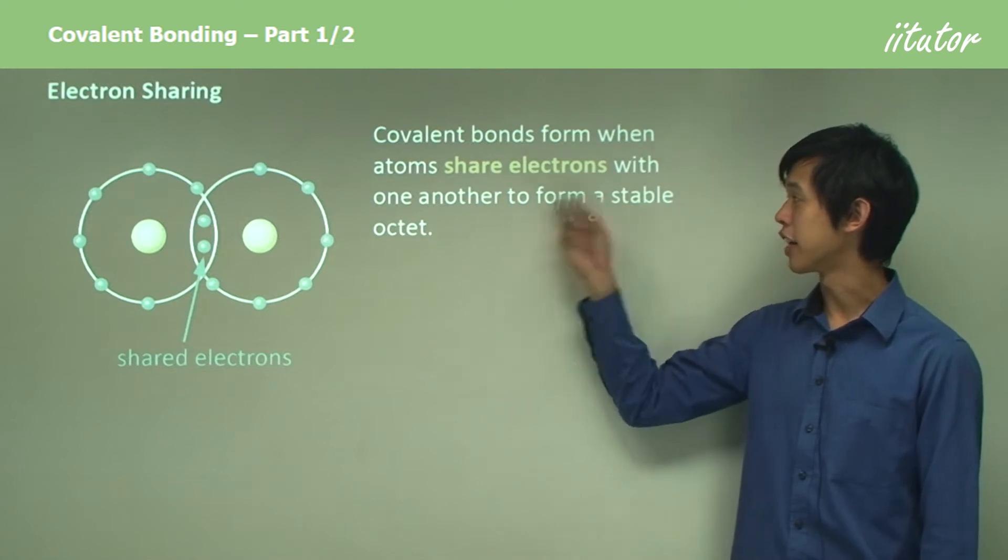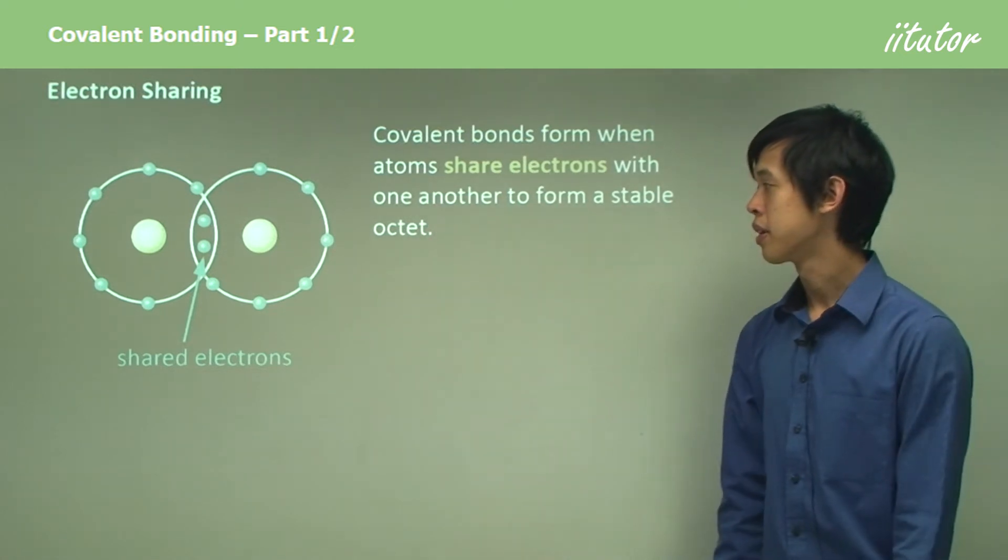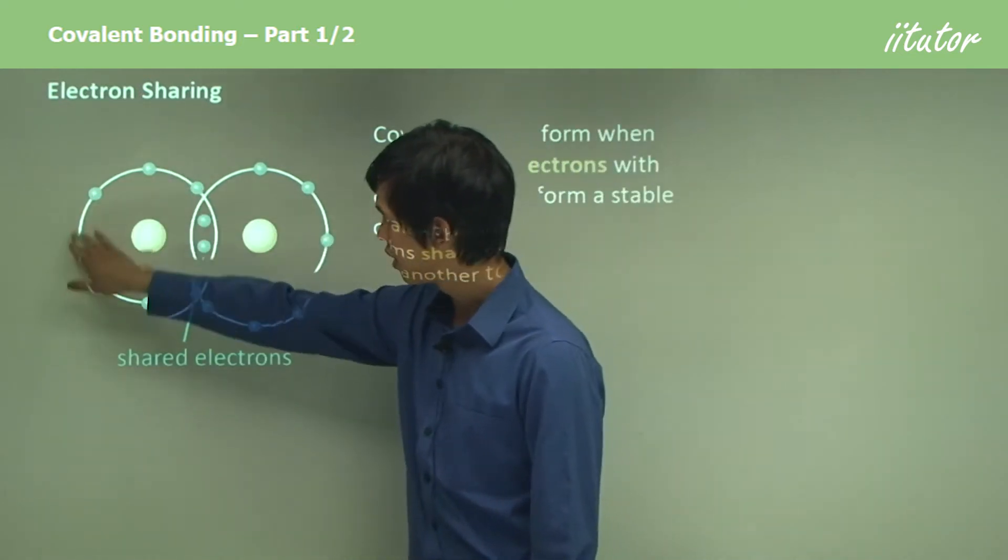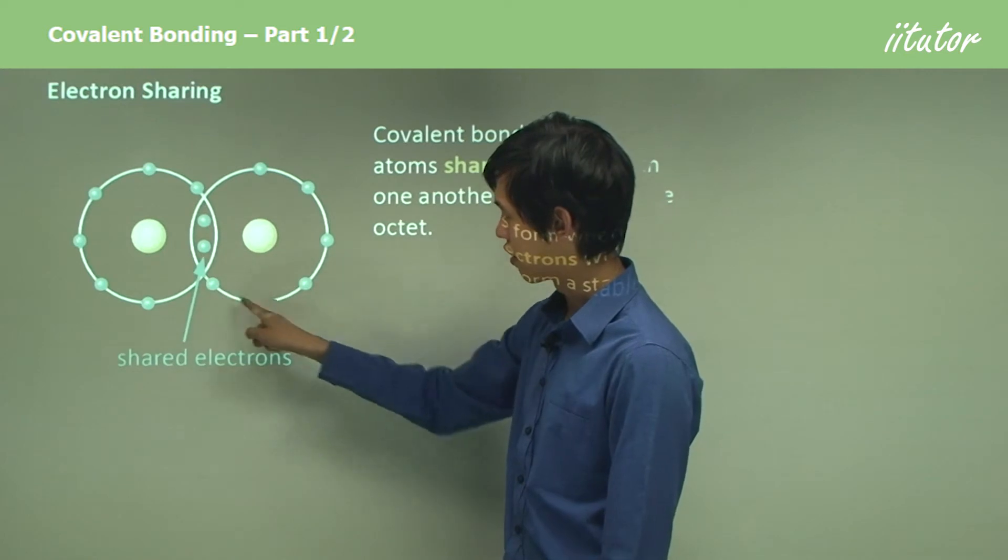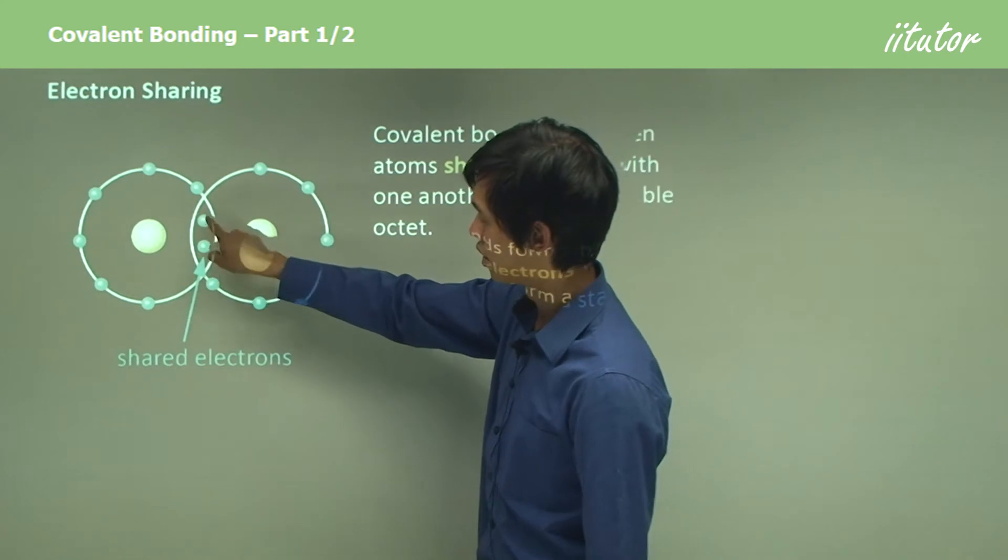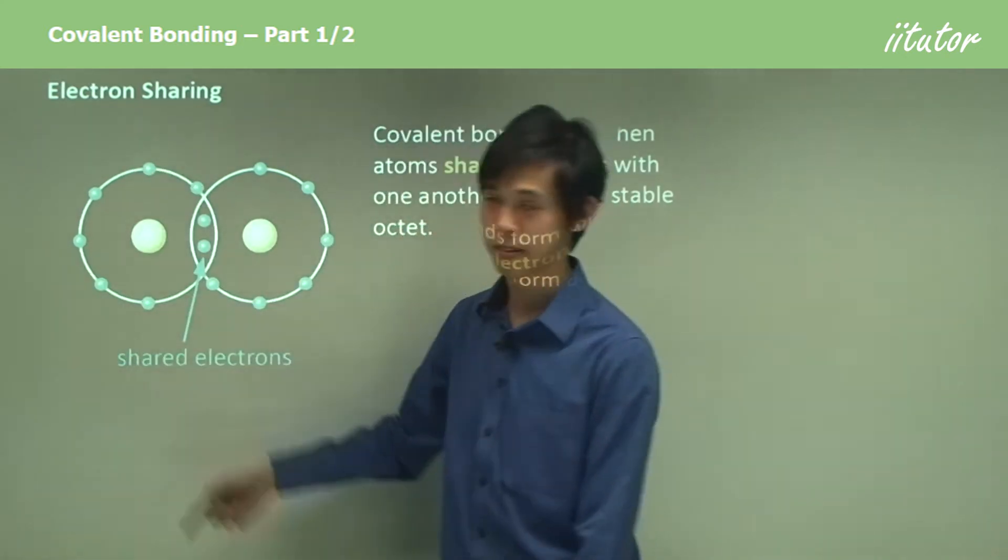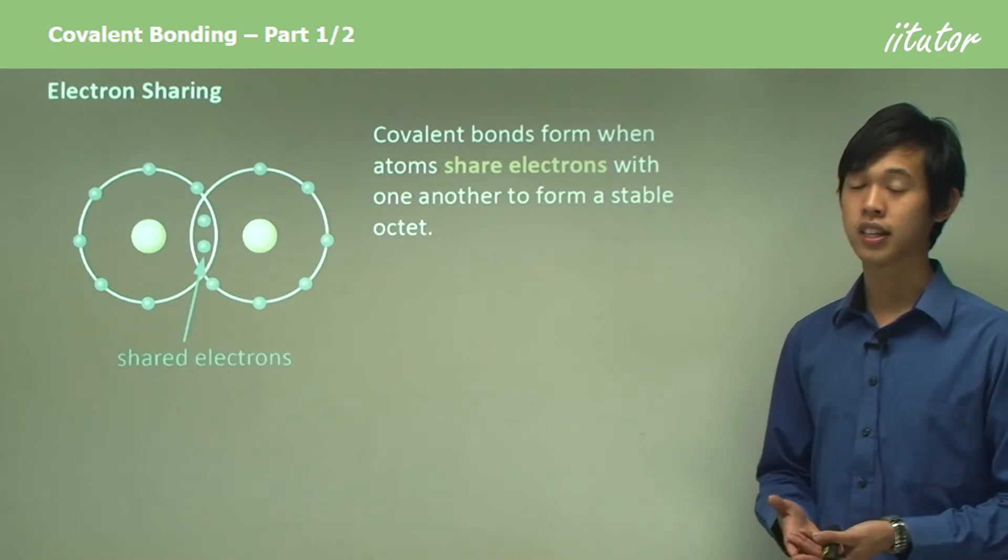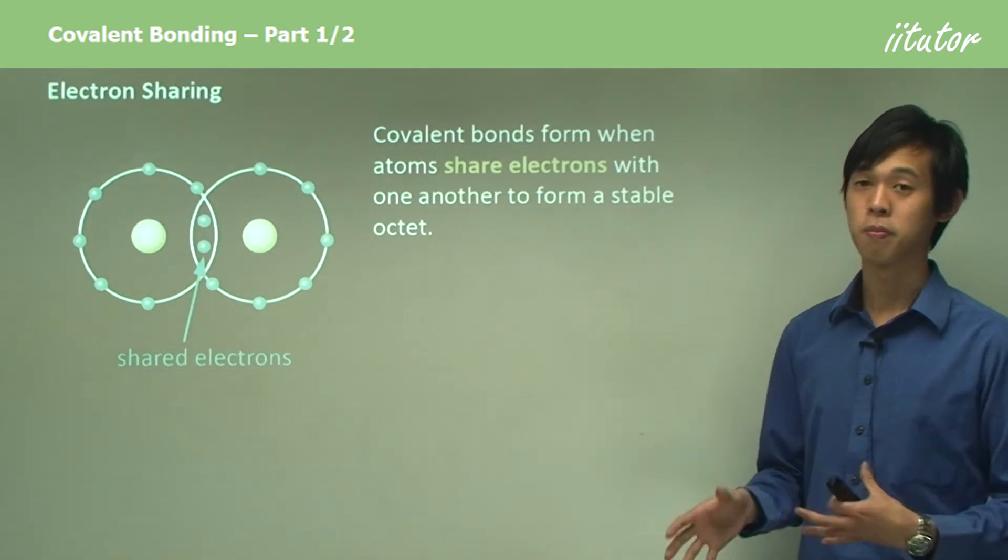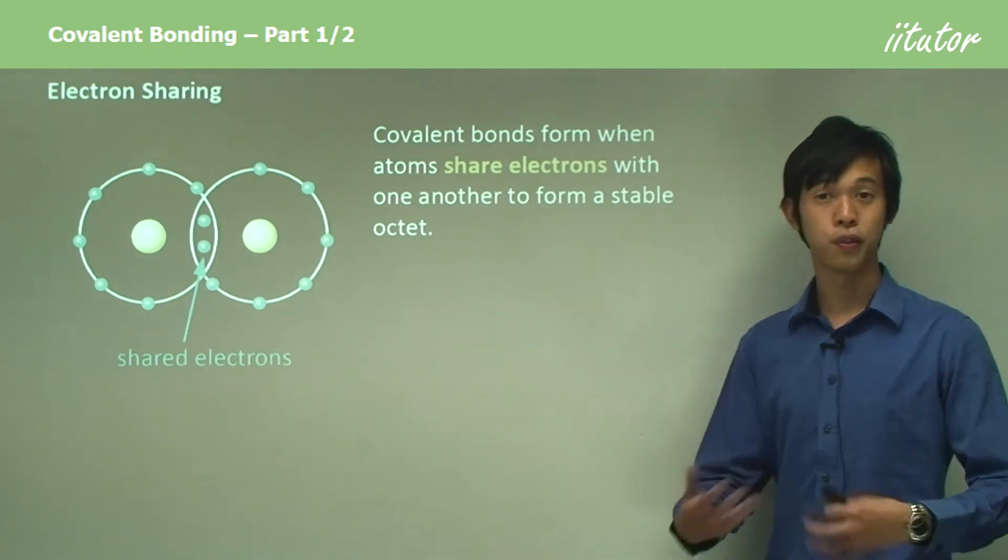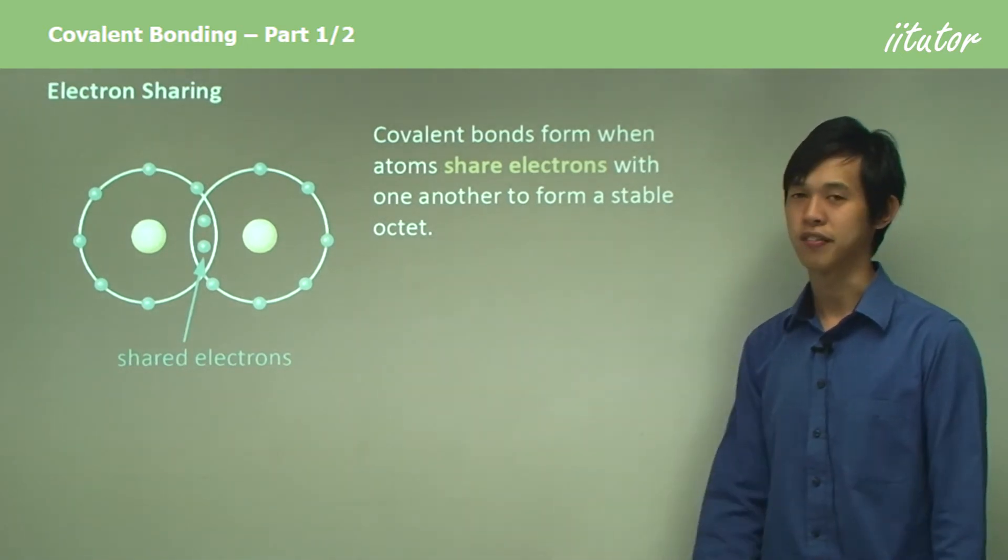Covalent bonds form when atoms share electrons with one another to form a stable octet. As you can see here, if you just ignore this one, there's one, two, three, four, five, six, seven, eight, and then likewise if you ignore this side, there's one, two, three, four, five, six, seven, eight. You can see by sharing the electron, they sort of fool each other into thinking that both of them have eight electrons, even though they don't actually in reality. It's a way of fooling each other into thinking they have the right amount of electrons.